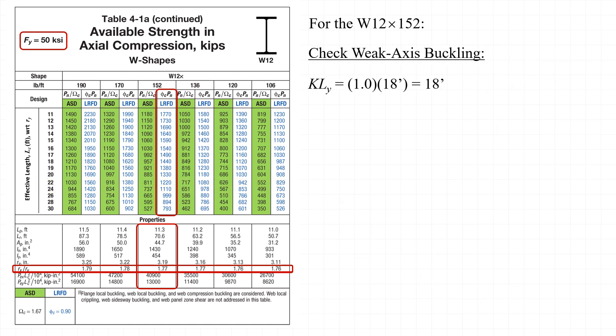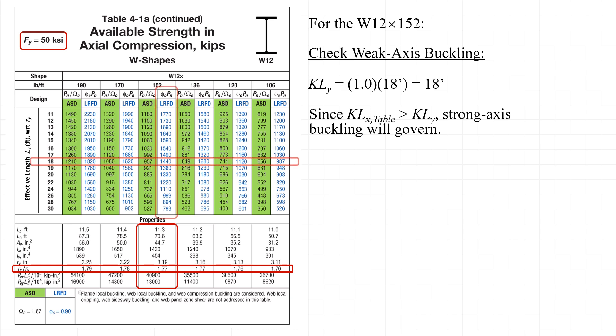Next, we check weak axis buckling with k_y = 1.0 and L = 18 feet, giving an effective length of 18 feet. Since the fictitious kl_x value of 23.39 feet used for the table is larger than kl_y = 18 feet, we can confirm that strong axis buckling governs. If desired, we can look up the available strength associated with weak axis buckling and find it is equal to 1440 kips.